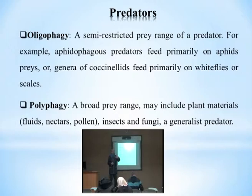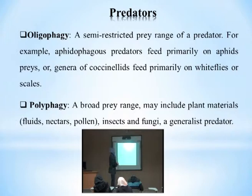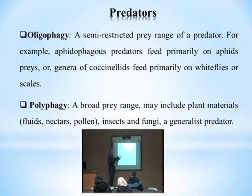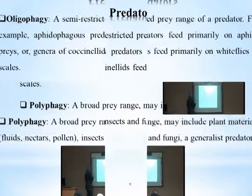Polyphagy — poly meaning multiple, phagy meaning food sources — means a broad prey range which includes plant materials like fluids, nectar, and pollen, insects, and fungi. These are generalist predators that eat whatever is in front of them — insects of all kinds, plant-based sources like nectar and pollen, and even decomposing matter like fungi and bacteria resulting from the breakdown of organic material.